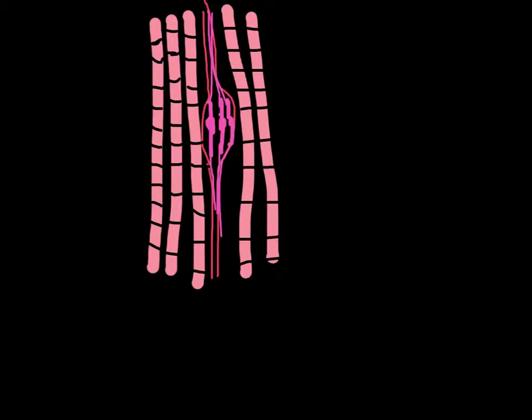The intrafusal fibers are innervated by special neurons called 1A or 2 afferents. So this is going to be 1A, and this is going to be our 2. These are 1A or 2 afferent neurons. These are the neurons that carry information to the central nervous system, the sensory neurons.